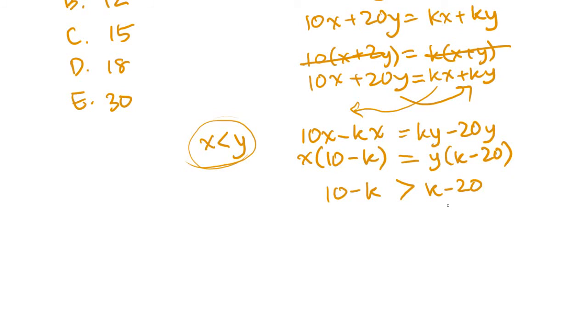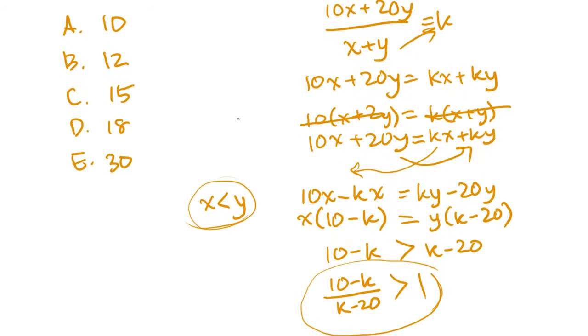What we can then do is actually cross multiply. We get 10 minus k over k minus 20 must be greater than 1. So now we have something that we can test with.